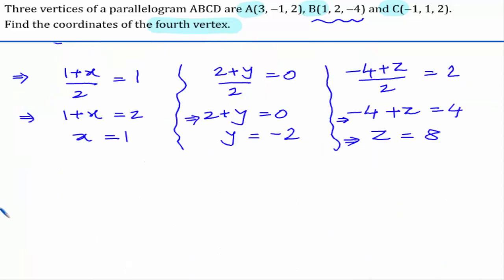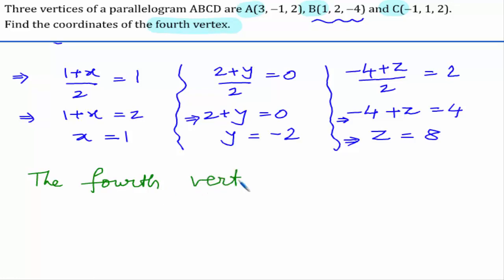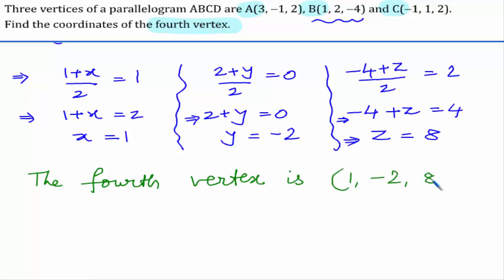So we can write the fourth vertex of the parallelogram as (1, -2, 8).